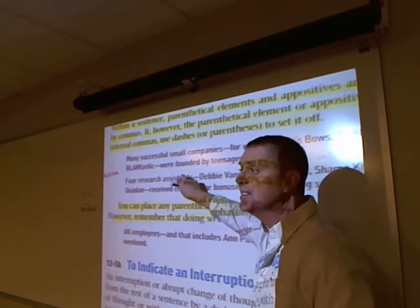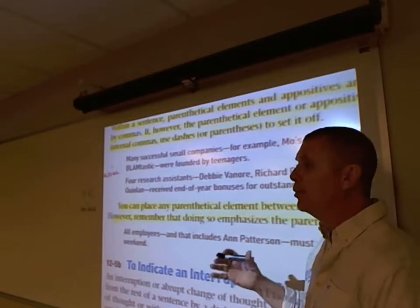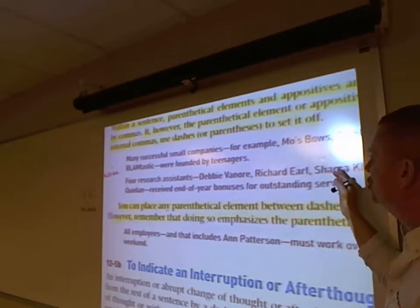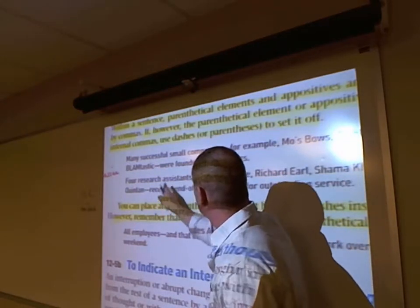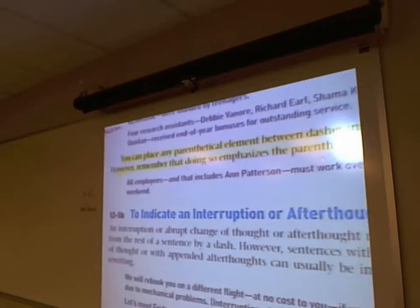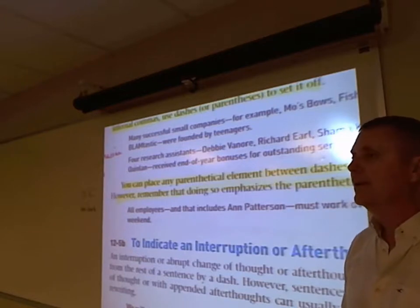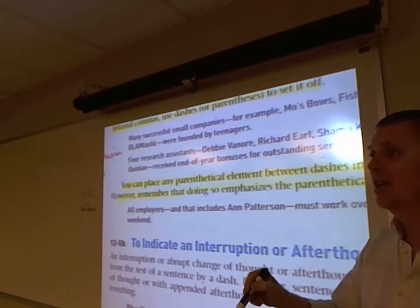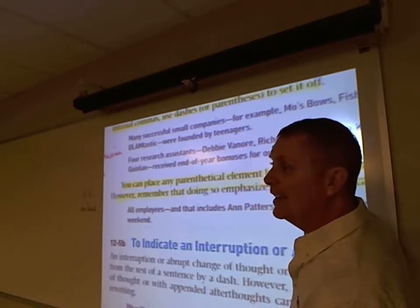'The research assistants — Debbie Van Orr, Richard Earl, Shama and someone, Quinlan — receive end-of-year bonuses for outstanding service.' The subject is 'assistants' and the verb is 'receive.' If I said 'four of the following research assistants,' I would use a colon because that's an independent clause. Since it's not, and I have items in a series with internal commas, I use a dash or parenthesis. The dash provides emphasis; the parenthesis de-emphasizes.